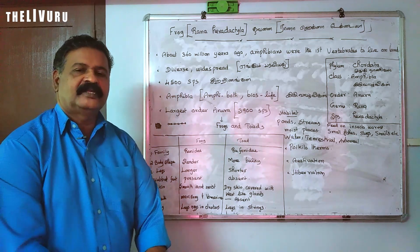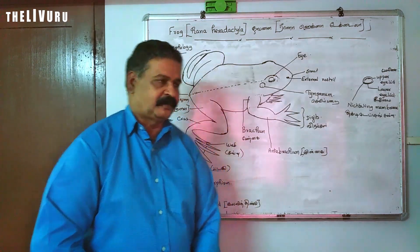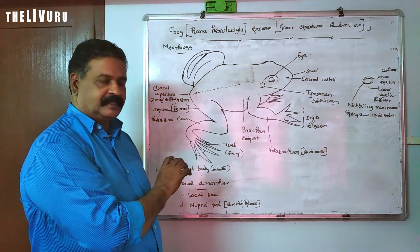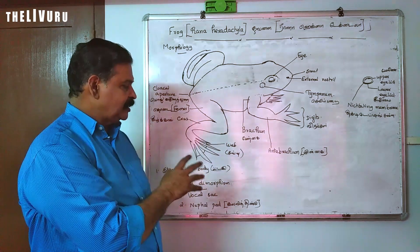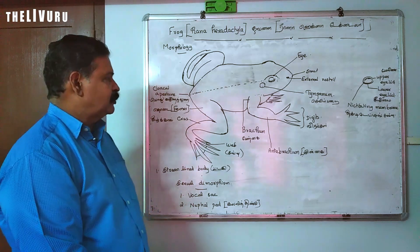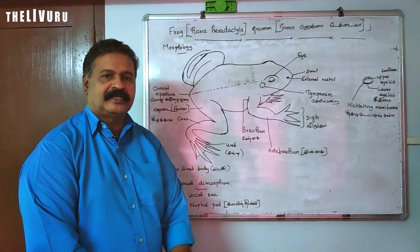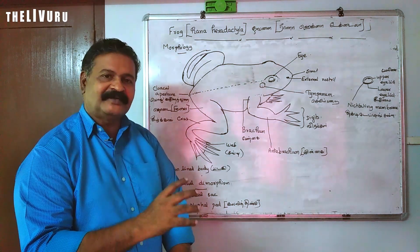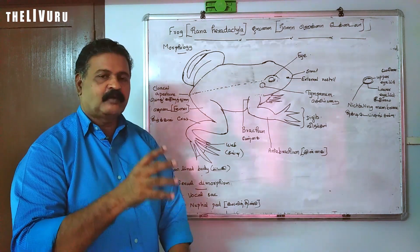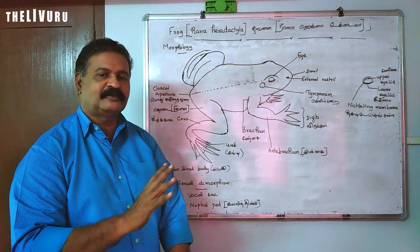Now we are going to see the morphology. The first feature is the streamlined body. The body is divided into head and trunk. There is no separate neck.